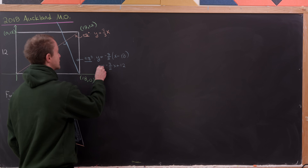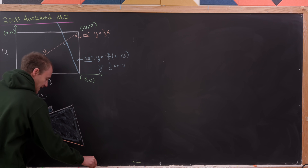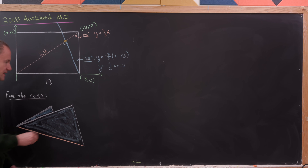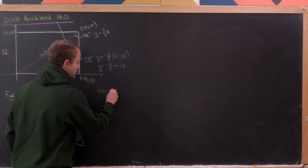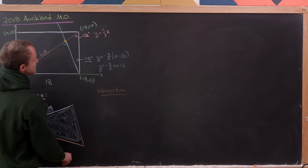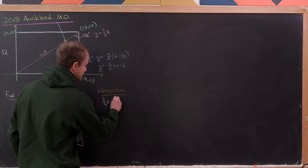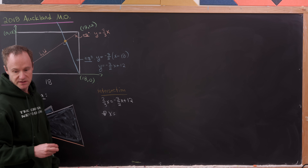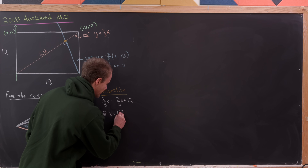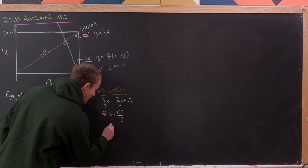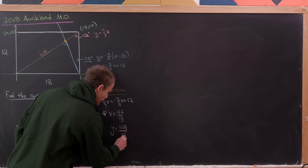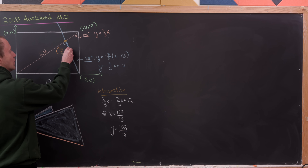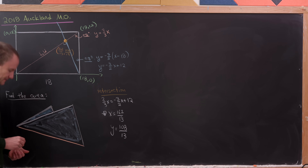Now it's useful to find the intersection of the folding line and the perpendicular line. Setting (2/3)x equal to (-3/2)x + 27 and solving, we get x = 162/13. Substituting back gives y = 108/13. So the intersection point is (162/13, 108/13).